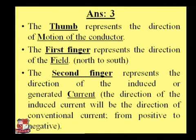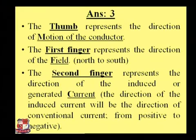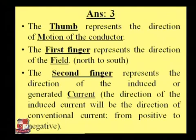The thumb represents the direction of motion of the conductor. Put your thumb in the direction of the conductor's motion. At 90 degrees to the thumb, put the first finger — the first finger represents the direction of the magnetic field. The second finger is again at 90 degrees with the first finger, and it represents the direction of the induced current or generated current due to the magnetic field.